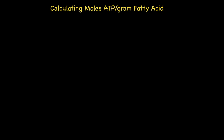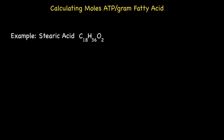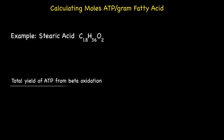Hi and welcome to another episode of Wonders of Chemistry with Mickey G. In this short episode I will show you how to calculate the number of moles of ATP per gram of fatty acid. Now using stearic acid as our example, all you need is the following formula: the total yield of ATP from beta oxidation divided by the molar mass of the fatty acid.